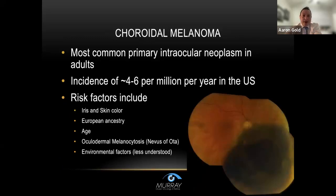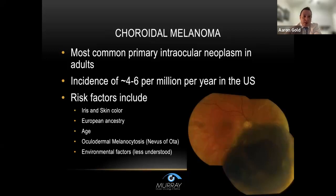This is the most common primary intraocular neoplasm in adults. The incidence is about five per million per year in the US, and it tends to affect people with lighter skin and lighter eyes. European ancestry confers about eight times greater chance of developing melanoma, and later in life the chance also increases. That said, I've seen patients of all ancestries and ages with melanoma — as young as an eight-year-old with choroidal melanoma.